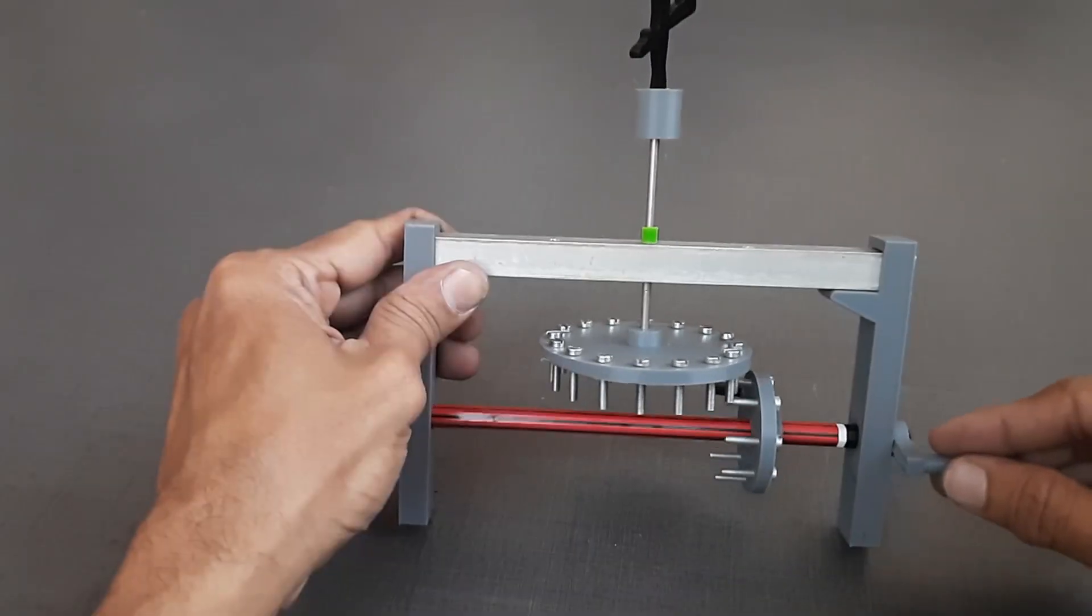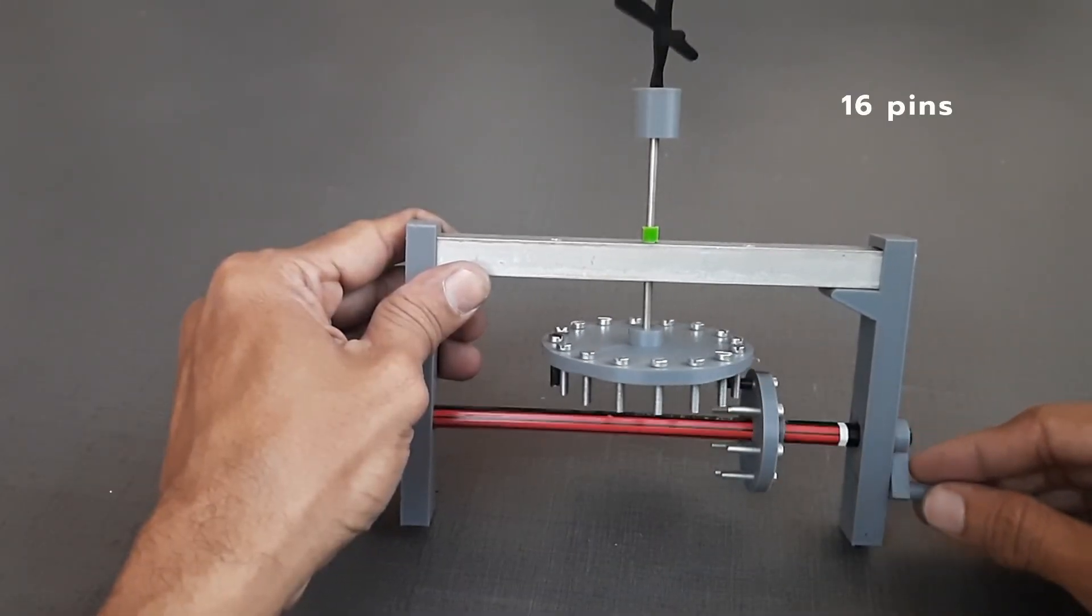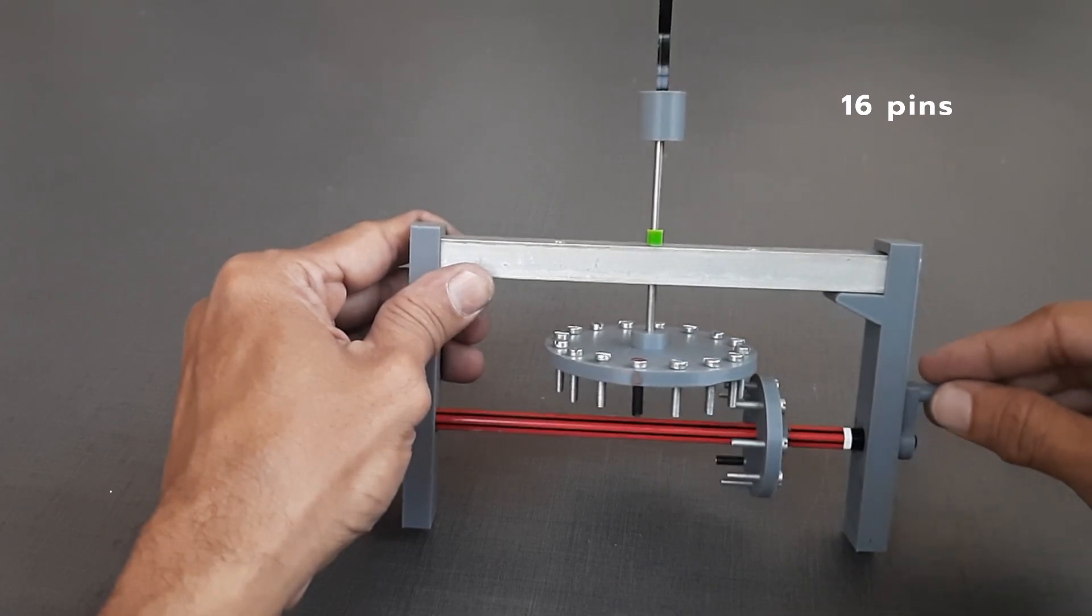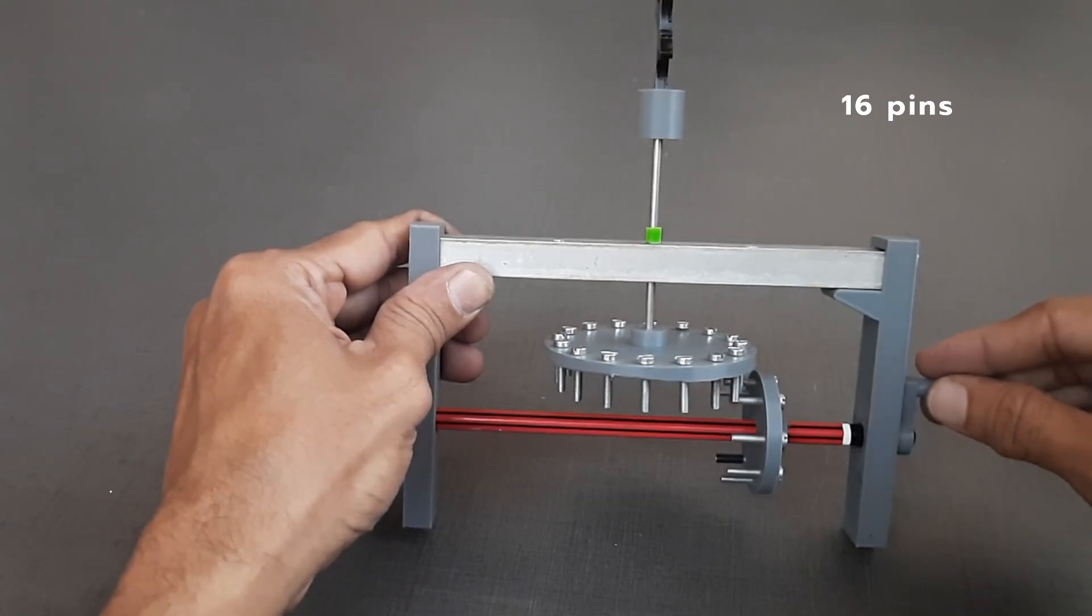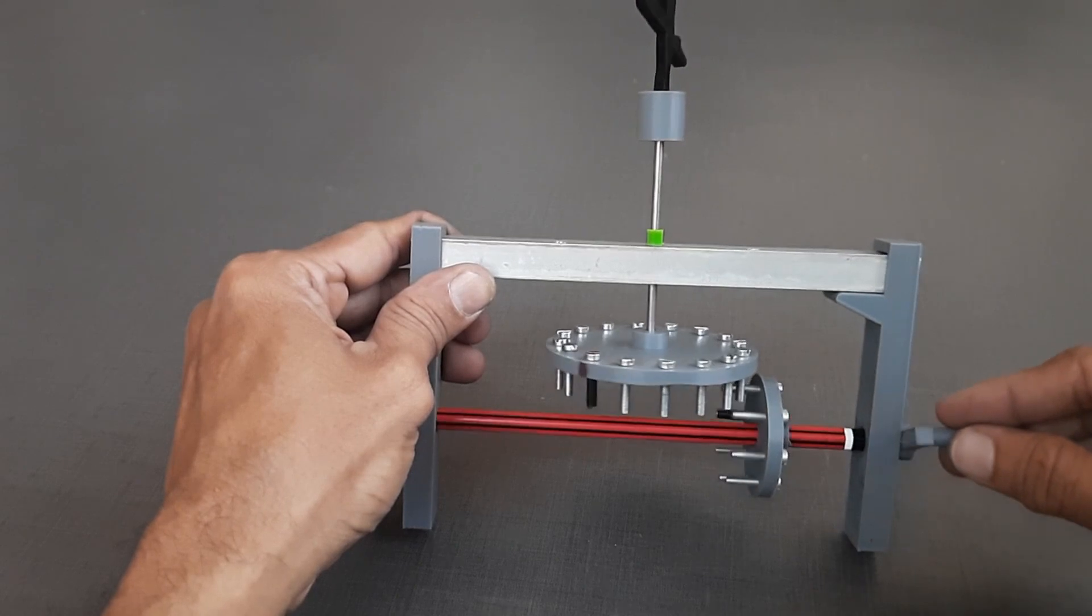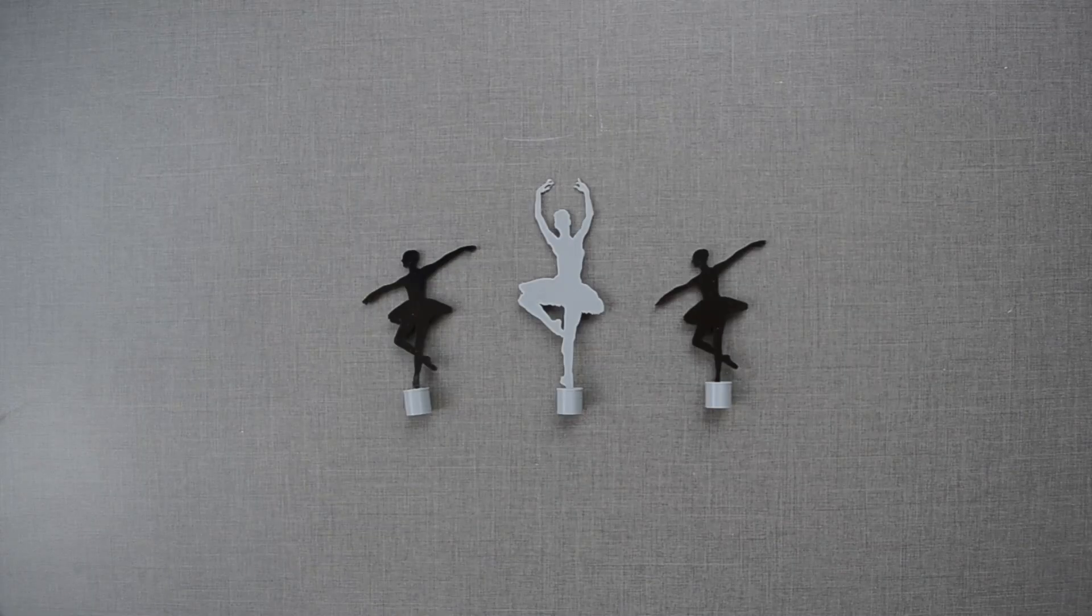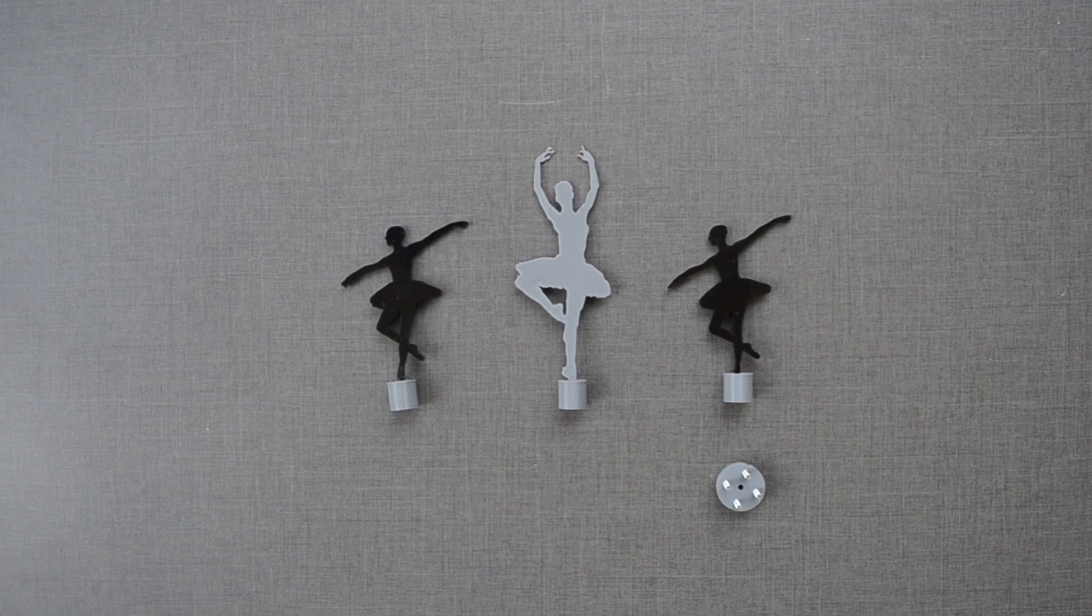We can reduce the speed of the follower wheel by half if we use 16 pins instead. This is how logic can be introduced in the automata when we have more than one character.